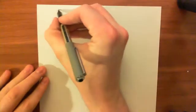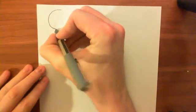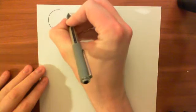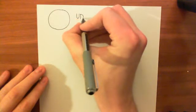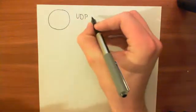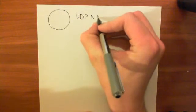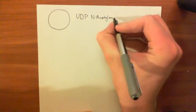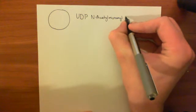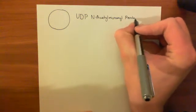Welcome to this fifth video on antibiotics targeting bacterial cell wall biosynthesis. So far, what we've seen is how — if this is our bacterial cell — we've seen how bacteria synthesize UDP-N-acetyl-muramyl-pentapeptide, that is, uridyl diphosphate-N-acetyl-muramyl-pentapeptide.